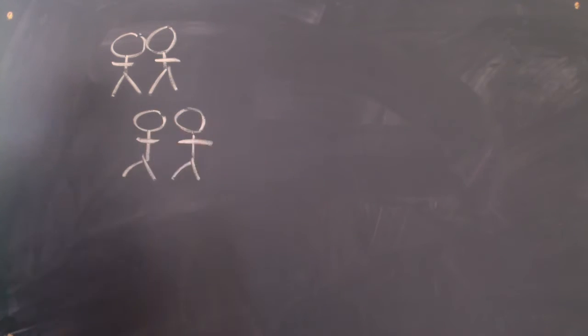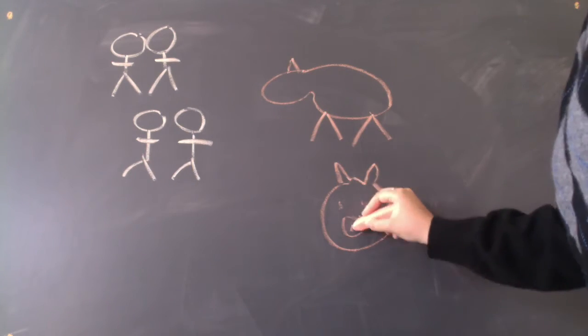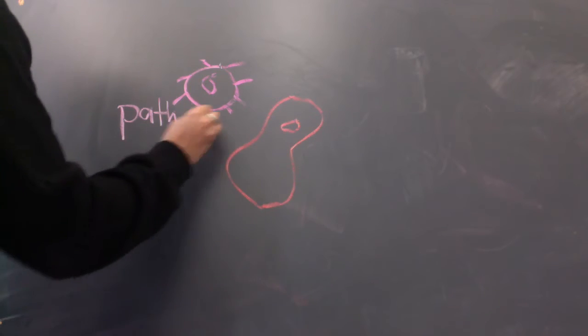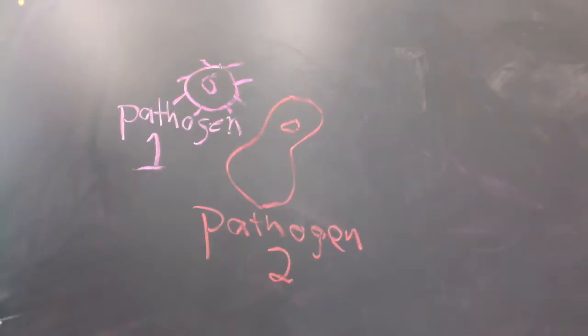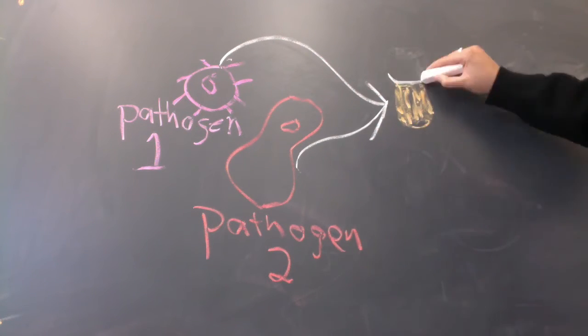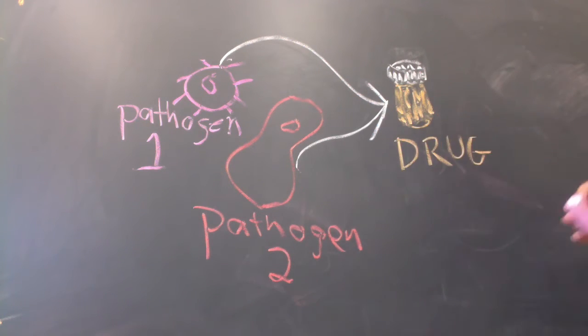Drug resistance is a major growing problem in public and animal health. For many pathogens, co-infection with another strain or pathogen is the rule rather than the exception. But the role played by co-infecting pathogens on the evolution of resistance is largely understudied.